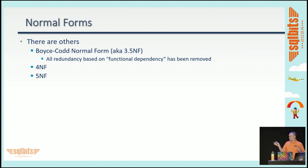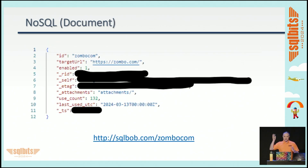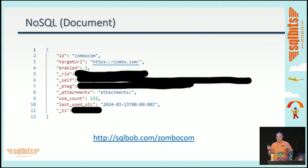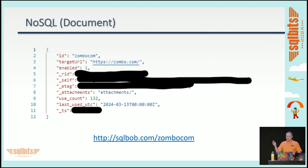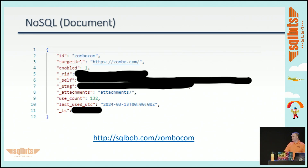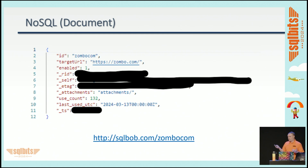So how does NoSQL compare? There are different models, as I mentioned. Here's a sample document from a NoSQL document database — a JSON document. We have fields: an ID, a URL, whether it's enabled, a use count, and a last use counter. This is a URL redirection system: if you go to sqlbob.com/zombo.com, it redirects you to zombo.com. This didn't really need to be in a relational database, so I built it in Cosmos DB using the document model.